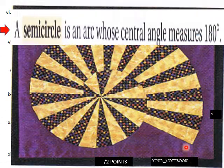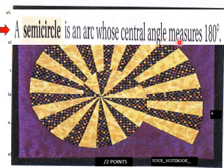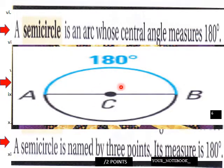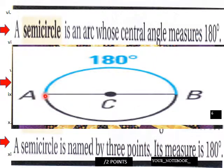A semicircle is an arc whose central angle measures 180 degrees. A semicircle is named by three points and its measure is always 180 degrees. For example, arc ACB would be your semicircle here.